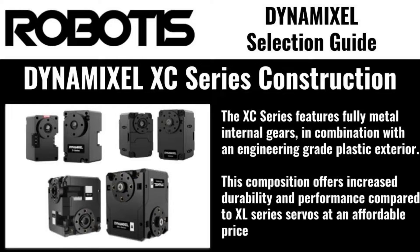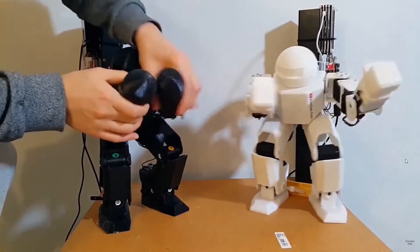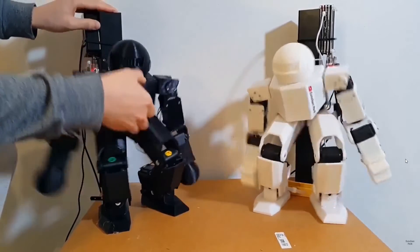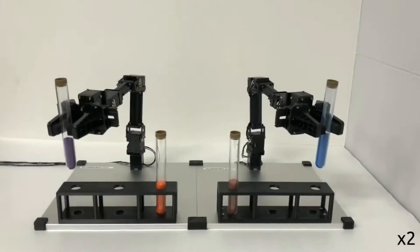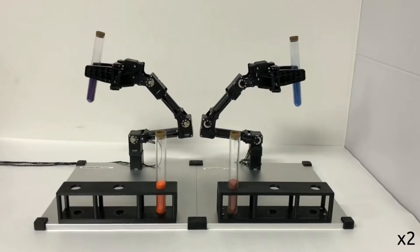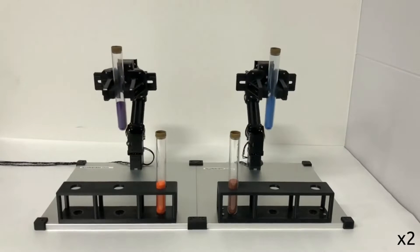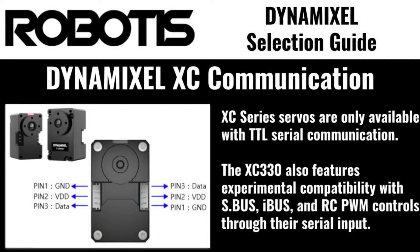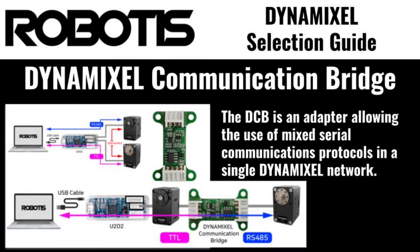Operational voltages for XC servos range from 5 volts to 12 volts. The XC series also features a line of 330-model compact servos as well as a 2XC430 dual-axis actuator with an integrated coreless motor. XC series servos are only available with TTL serial communication and can't be used in RS-485 systems without the use of a Dynamixel communication bridge.